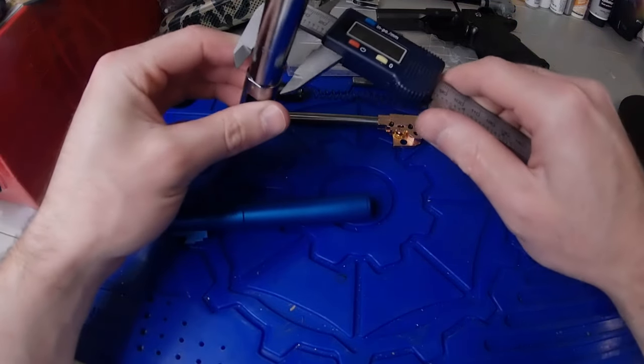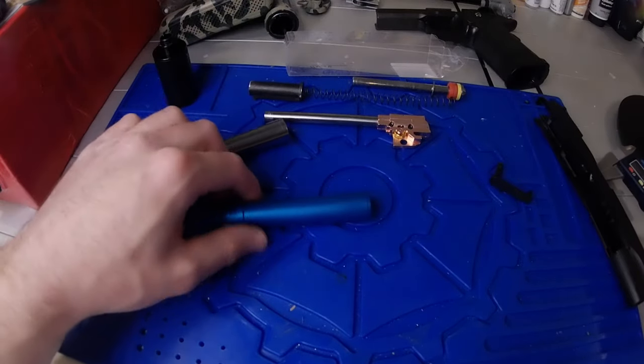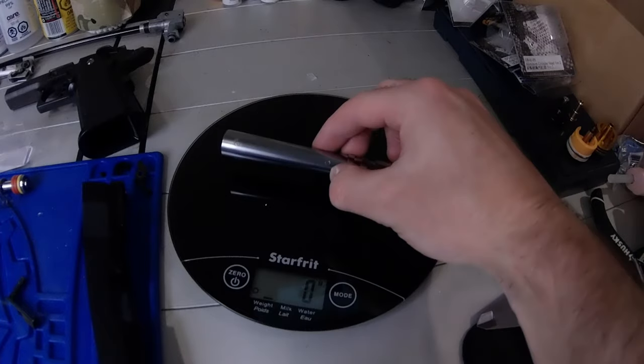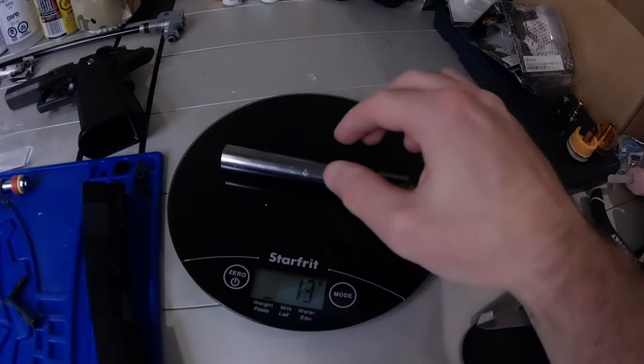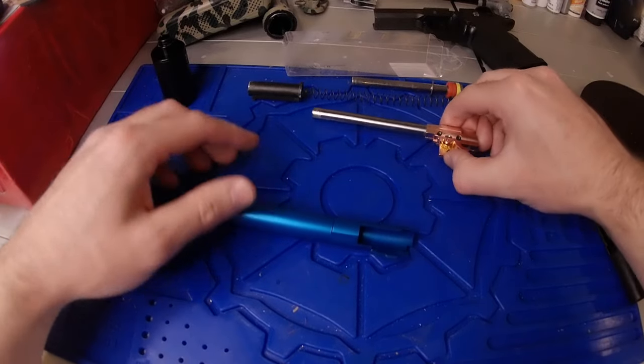If you also check down here we have 16.15 on the Airsoft Masterpiece and 15.78 on the stock so you can tell overall the aluminum barrel is a little thicker. Now I just want to weigh them. Stock barrel is 13 grams and the Airsoft Masterpiece is 34 grams so it's quite a bit heavier.